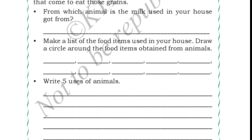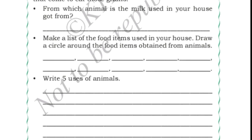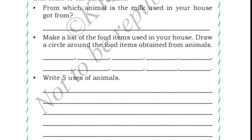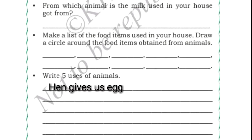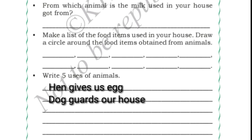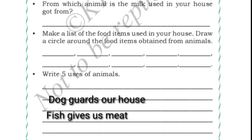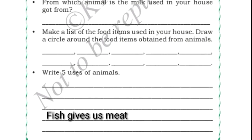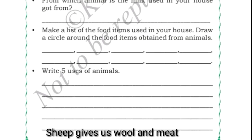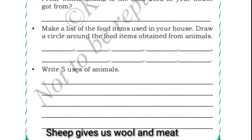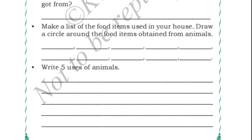Now write five uses of animals. Hen gives us egg, dog guards our house, fish gives us meat, sheep gives us wool and meat, and cow gives us milk. Like this, you can write whichever uses of animals you want.